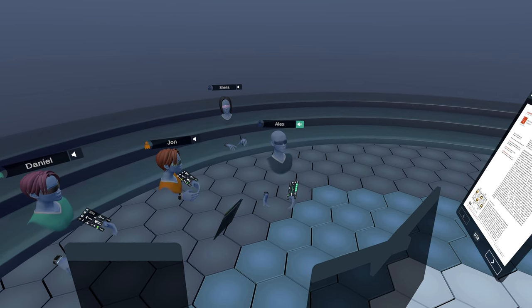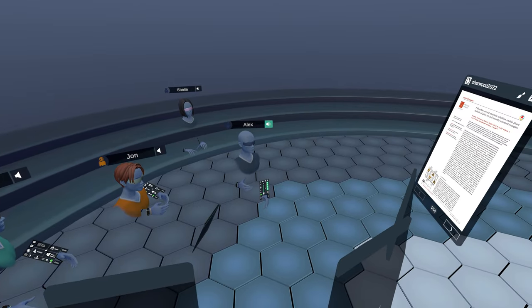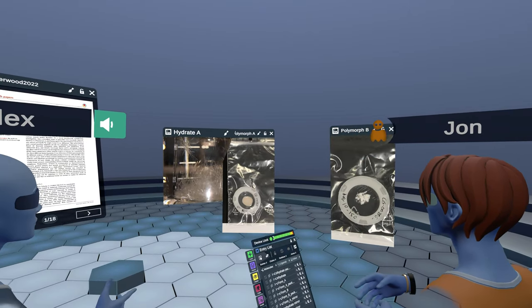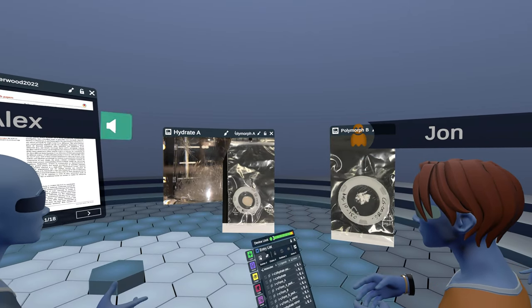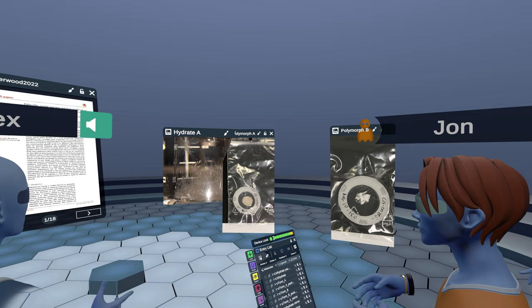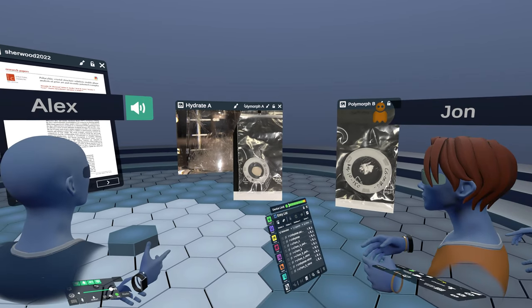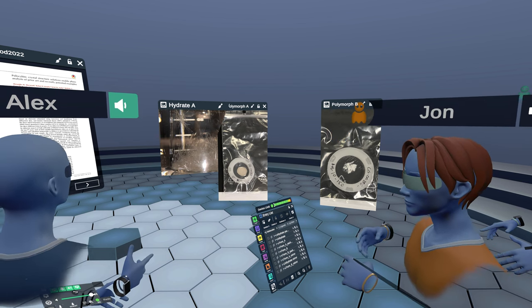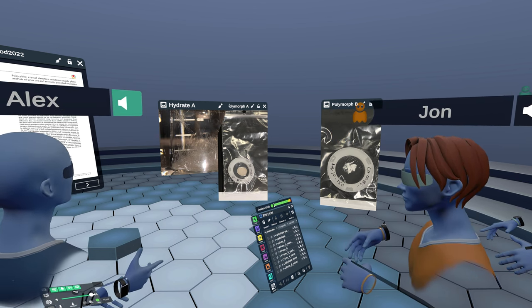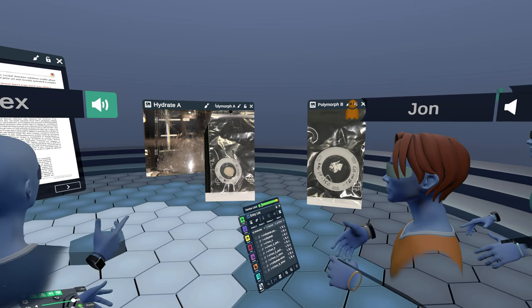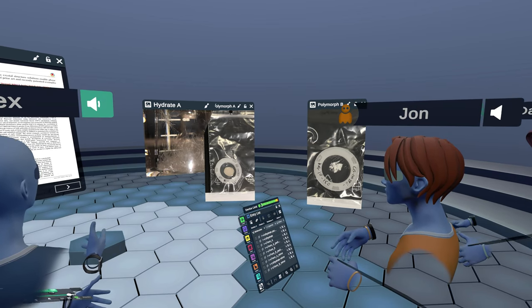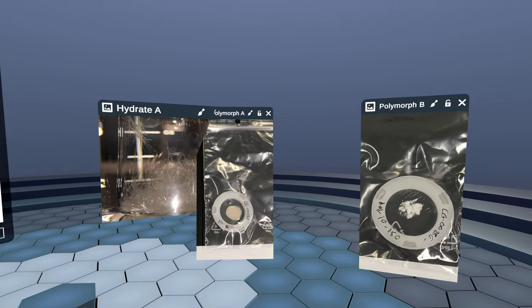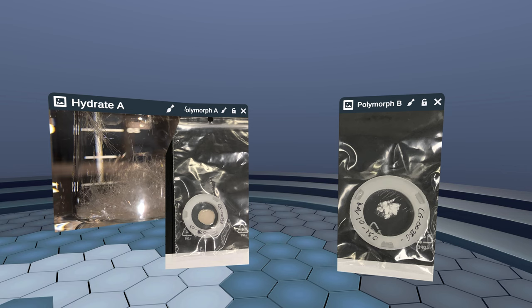So what we're looking at here in these three images, they're all psilocybin. Each of these images contains a picture of pure synthetic psilocybin. But what's different in these three images, which is not readily apparent, is that they are comprised of three different crystal forms. On the left here, this is what's called the hydrate of psilocybin, hydrate A. And then we've got two anhydrous polymorphs, polymorph A and polymorph B.